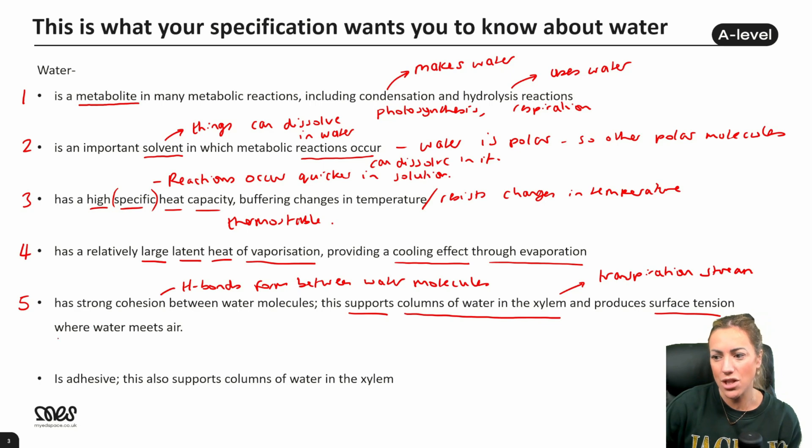It also produces surface tension where water meets air, because the water molecules at the surface of a body of water are attracted very strongly to the water molecules below and less strongly to the air above. So it creates this tension on the surface of the water, which means small invertebrates such as, I mean pond skaters is a good one to name because they're literally called pond skaters because they almost skate on the surface of the water. Small invertebrates can walk on water, because of that surface tension created because of the cohesive property of water molecules.